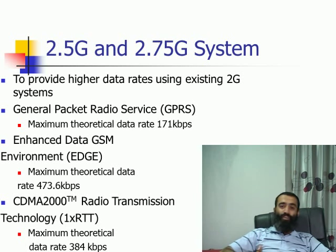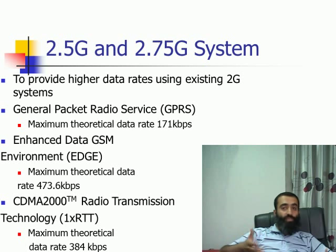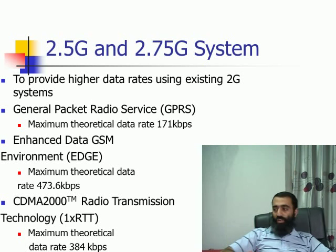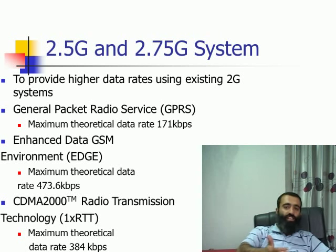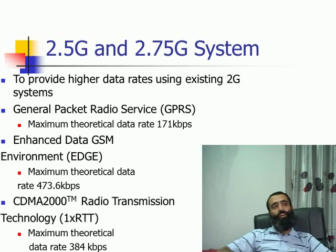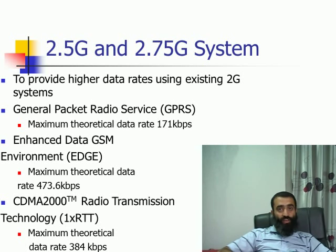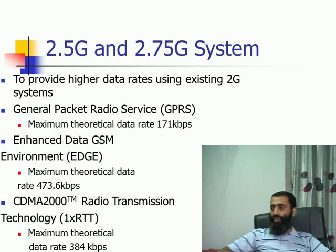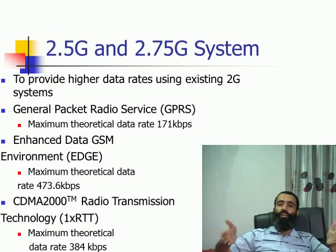With the passage of time, subscribers wanted more internet traffic on their mobile phones — they wanted to send large emails, browse heavy sites, and stream videos. One possibility was to go from 2G to 3G, but going from 2G to 3G is a huge investment because the operator has to buy new spectrum and install new technology, which takes time and significant money. That is why operators came up with an intermediate solution: the 2.5G and 2.75G systems that were between the 2G and 3G systems.